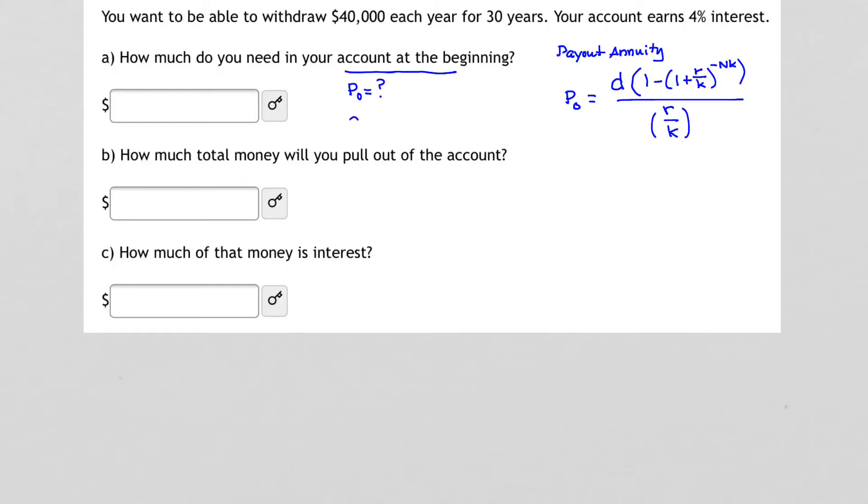We are told D, which is our withdrawals. We're withdrawing $40,000 each year. So D is $40,000. Because we're doing it once a year for each year, K represents 1, the number of times per year. And N, because we'll be making those deposits for 30 years, N is 30.